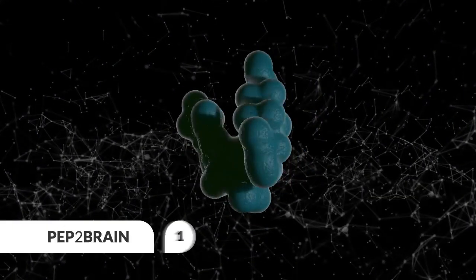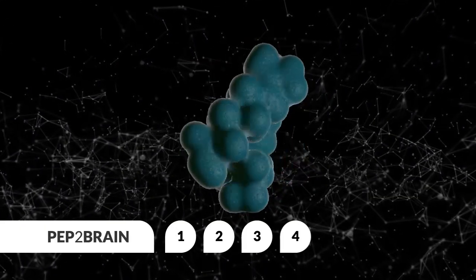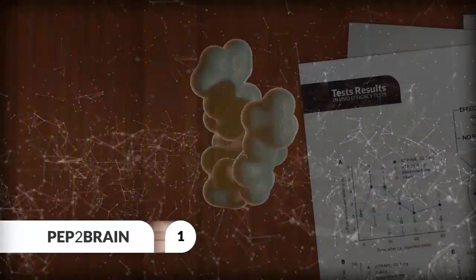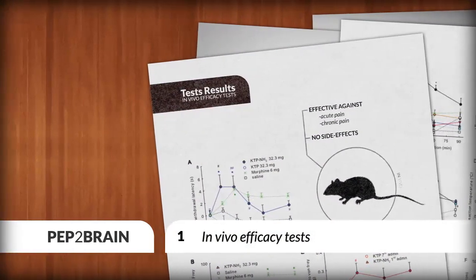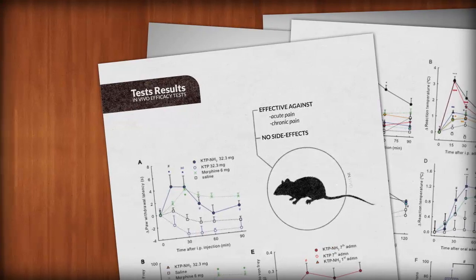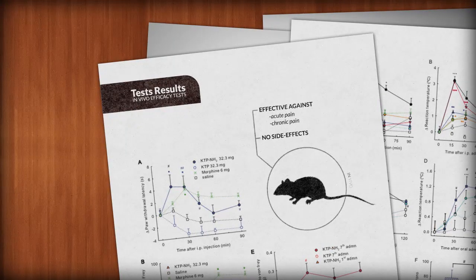The PEP2 Brain Project progressed through four milestones. The first milestone involved in vivo efficacy tests with amidated kyotorphin. It was found to be significantly effective.